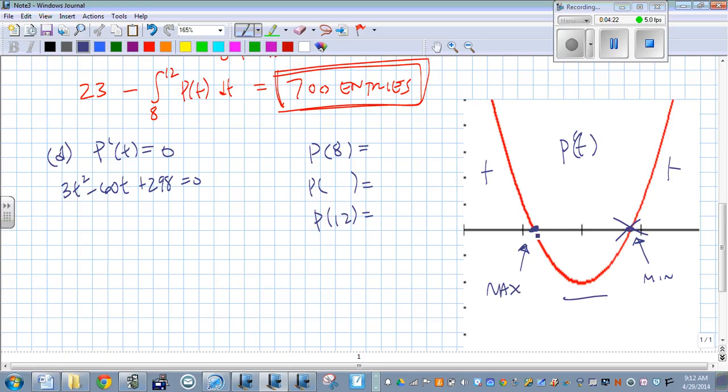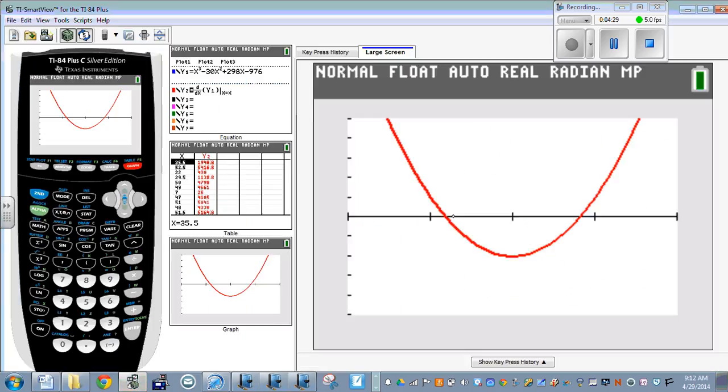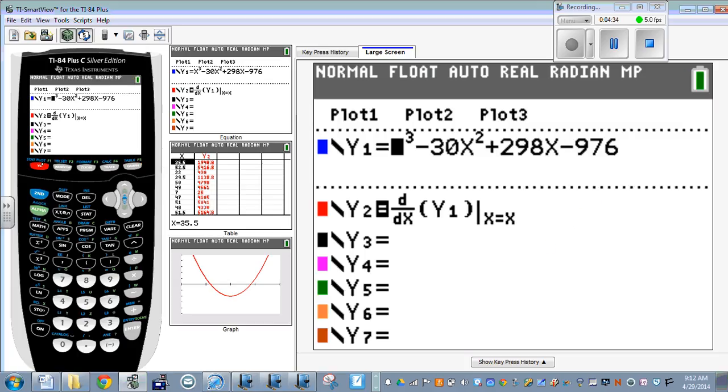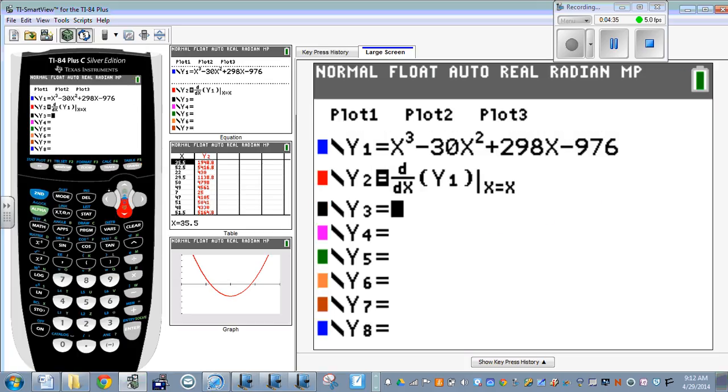So we want to find this local maximum. And I had problems last period with the calculator calculating that 0, and I don't know if it's because this is the derivative. So I'm just going to, for this one, just to make sure it works nicely, I'm just going to type in the actual derivative.